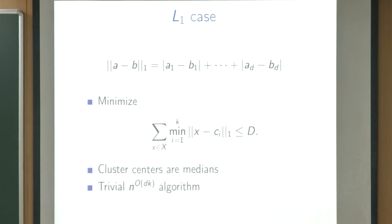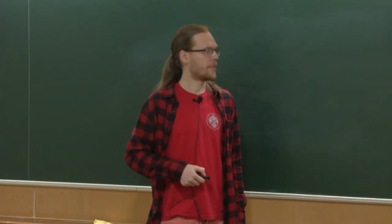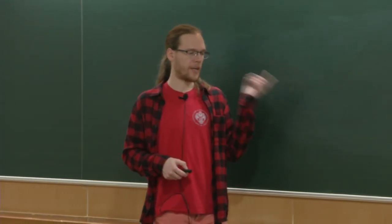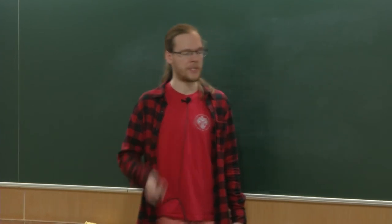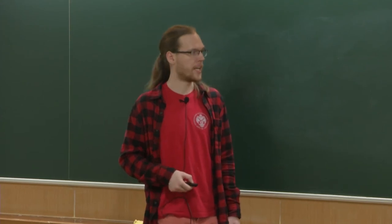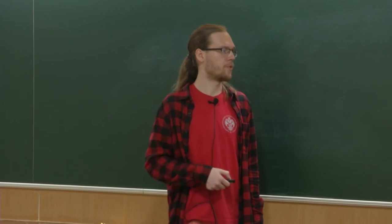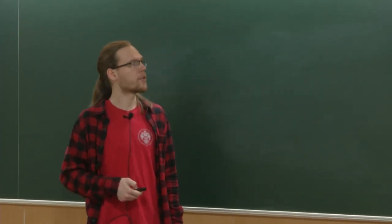Let's move to the actual results. We start with the L1 case, where the distance is the Manhattan distance — the sum over all coordinates of the absolute difference between coordinates. For L1, if we have a fixed cluster, its center is necessarily the coordinate-wise median. From that it follows that there is a trivial n^{dk} algorithm, because in every coordinate of every cluster we just brute-force all possible values of the median, since the median is always one of the present values.